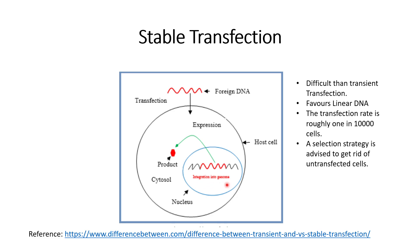The usual strategy used to confirm host genome integration is that along with the foreign DNA, researchers will also co-transfect an antibiotic resistance gene as a selection marker. When the cells undergo stable transfection, they can be selectively separated from cells that are not transfected using this selection marker — that is, co-transfection of an antibiotic resistance gene done along with the foreign DNA.